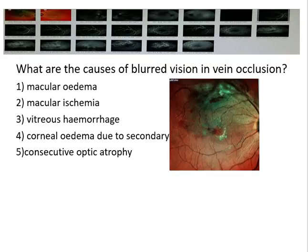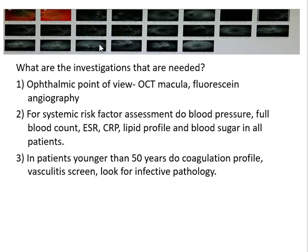The causes of blurring of vision in vein occlusion include macular edema — collection of fluid in the macular area — or capillary non-perfusion leading to macular ischemia, where there may be damage to photoreceptor layers without edema. Other causes include vitreous hemorrhage, corneal edema secondary to glaucoma, secondary optic atrophy, and hemorrhage in the macular area itself.